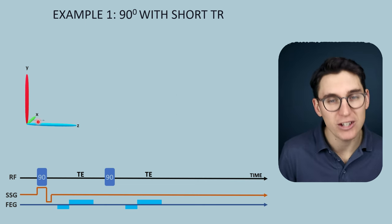Repeating this at continuing short TRs, we lose quite a lot of signal and eventually reach a steady state where the degree of recovery and transverse magnetization even out, giving a set signal for this specific pulse sequence at this TR. Notice that a 90 degree flip angle doesn't always give the full amount of transverse magnetization when using short TRs.